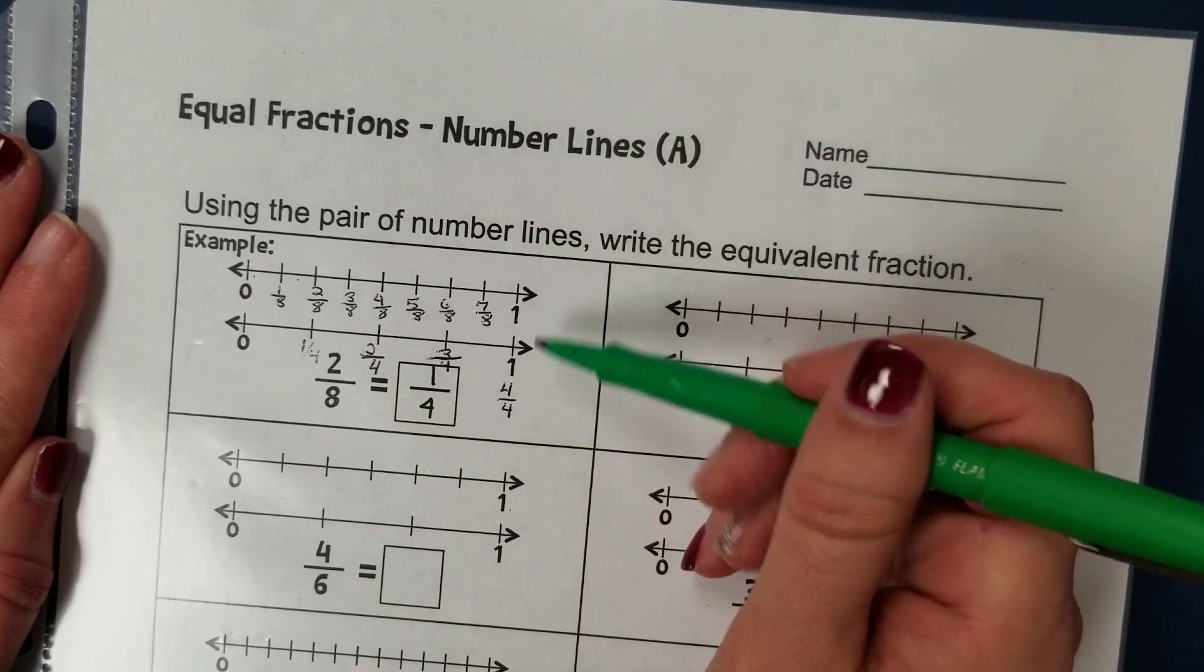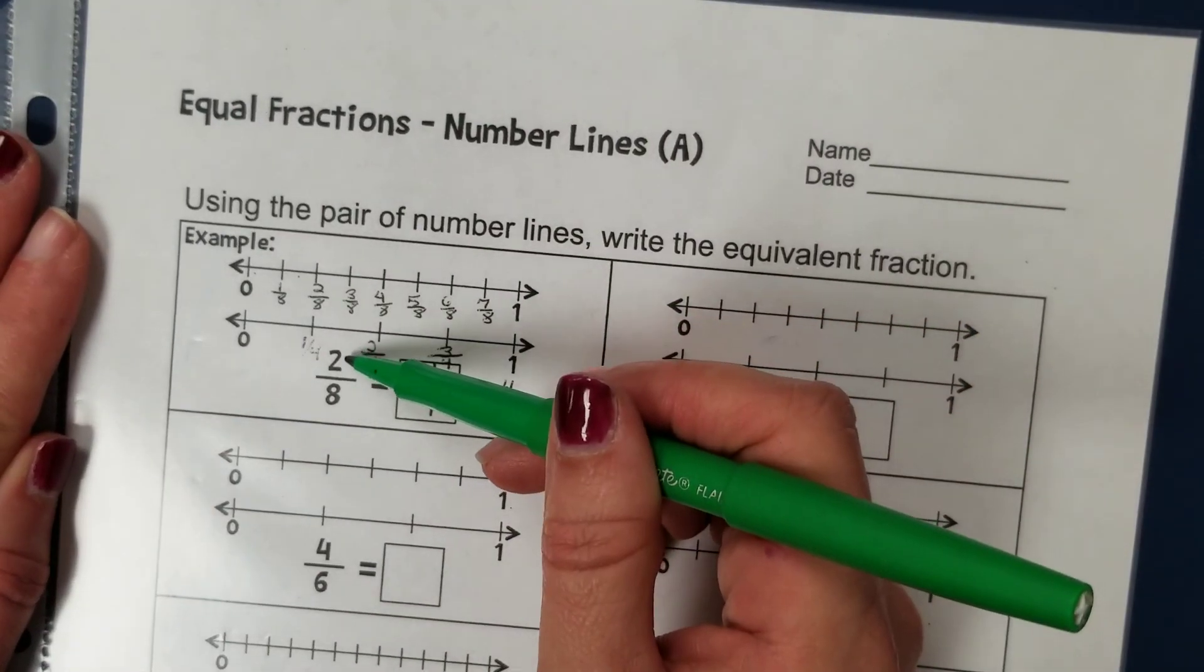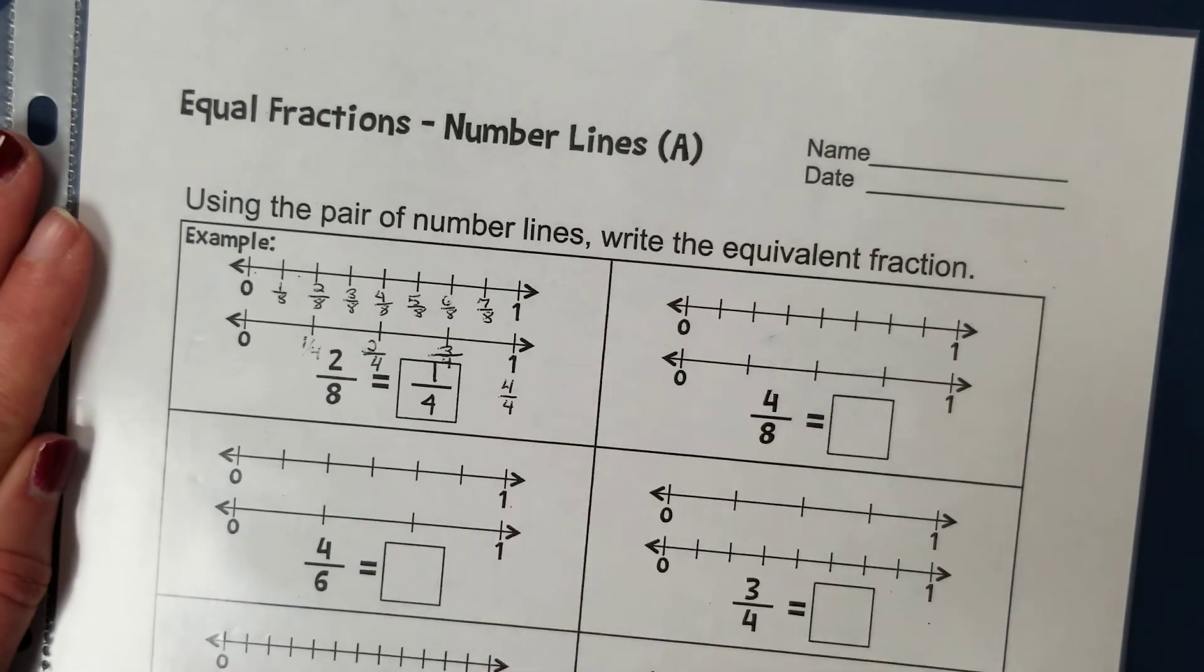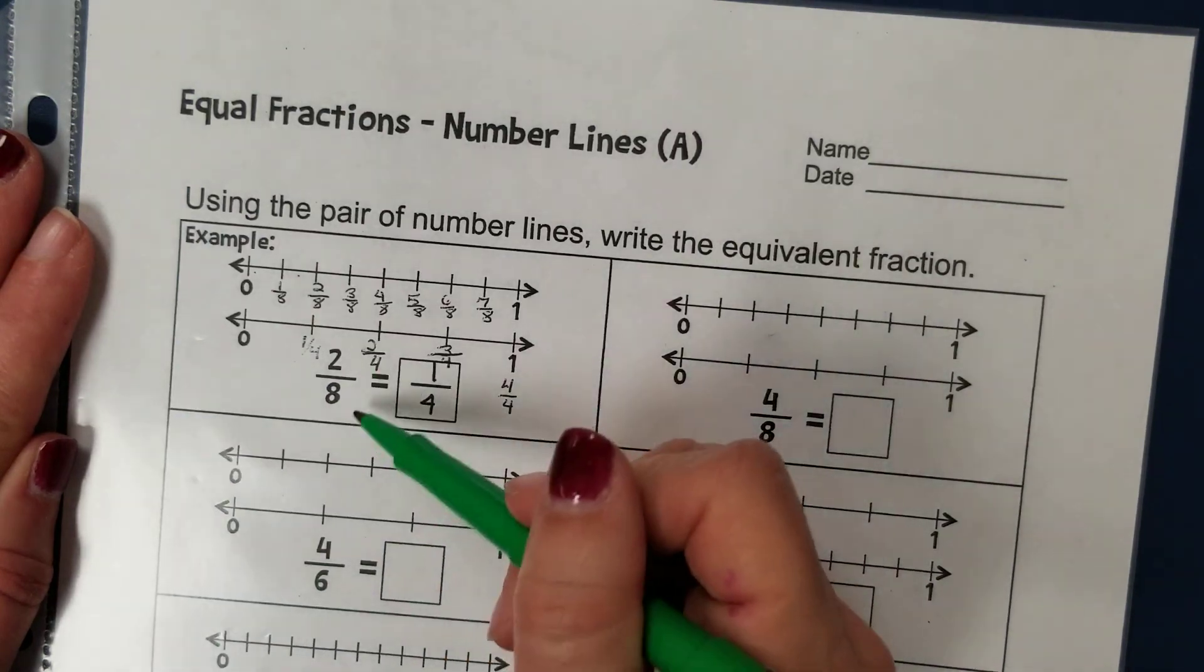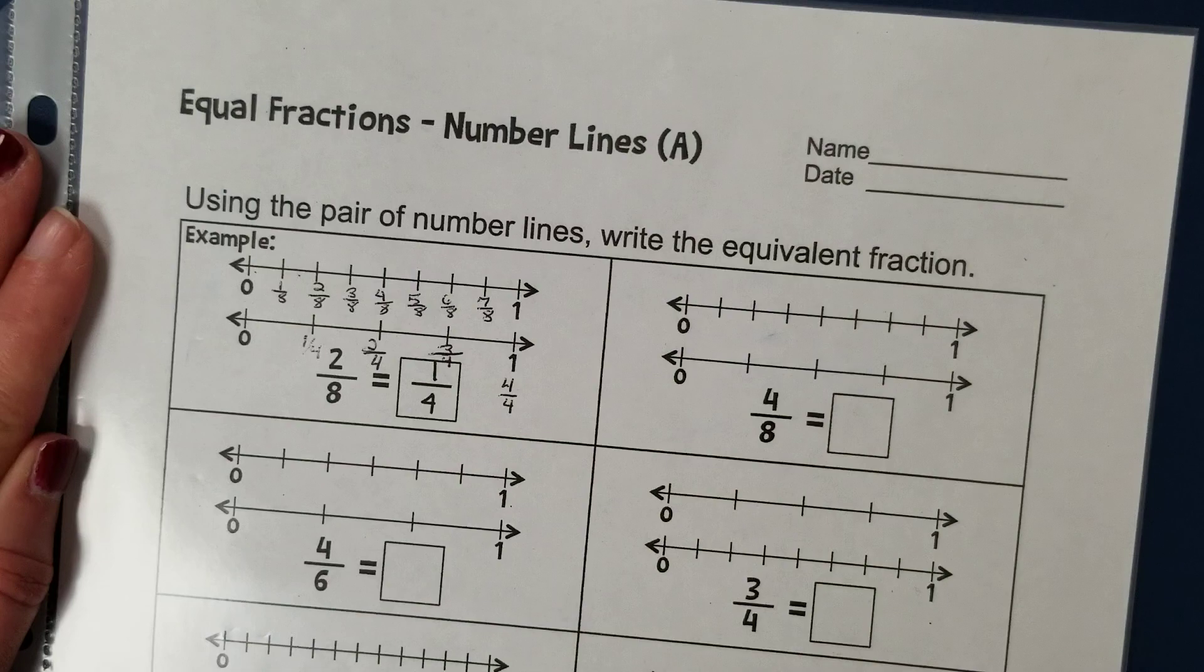If we look here at the example, it has two number lines, and they've written in the first fraction that they want us to consider, two-eighths. We've talked a lot about the fact that when we're working with fractions on a number line or with shapes,